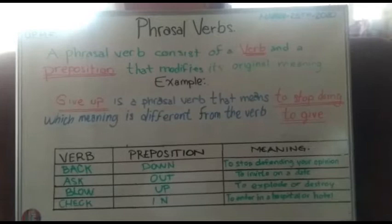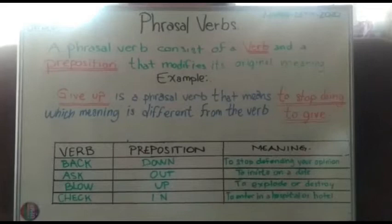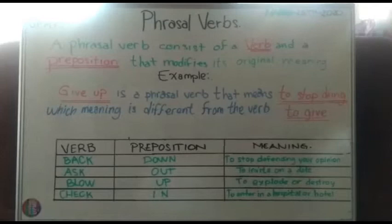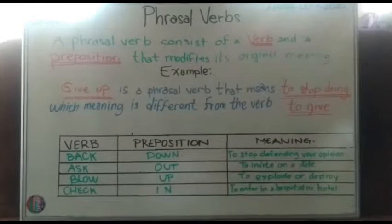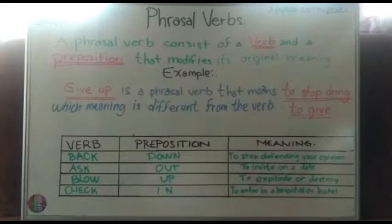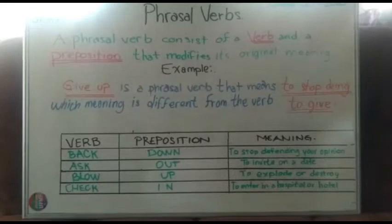Here we have a list of verbs with their prepositions and meanings. The verb 'back,' the verb 'ask,' the verb 'blow,' and the verb 'check.' For example: 'back down' means to stop defending your opinion; 'ask out' means to invite on a date; 'blow up' means to explode or destroy; and 'check in' means to enter a hospital or a hotel.